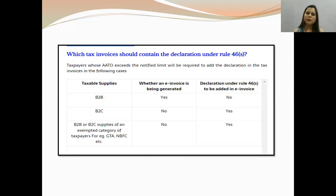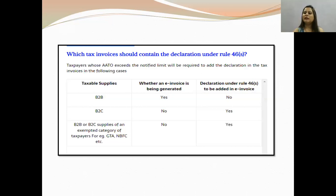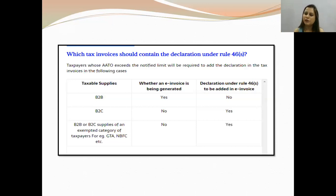Taxpayers whose AATO exceeds the notified limit will be required to add the declaration in tax invoices in the following cases. First, let's look at taxable supplies in B2B: if an e-invoice is being generated, then yes — you do not need to give a declaration under Rule 46S. When you have already generated an e-invoice, you don't give the declaration. So the answer is no — declaration is not required in that case.